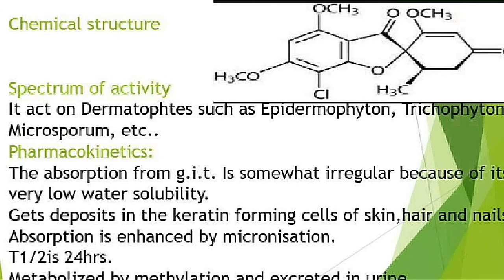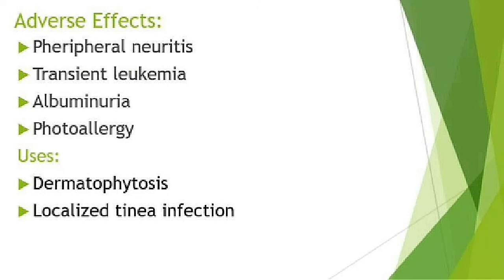The chemical structure of griseofulvin is shown here. Its spectrum of activity covers dermatophytes such as Epidermophyton, Trichophyton, and Microsporum. Pharmacokinetics: absorption from the GIT is irregular due to poor water solubility. It gets deposited in protein-bound form in cells of skin, hair, and nails. Absorption is enhanced by micronization. The half-life is around 24 hours and it is metabolized by methylation and excreted through urine.